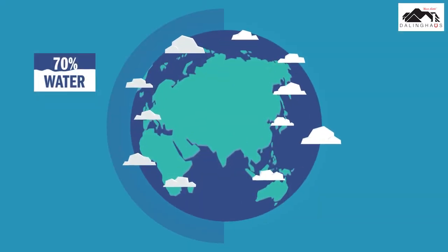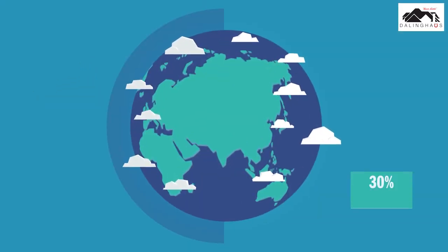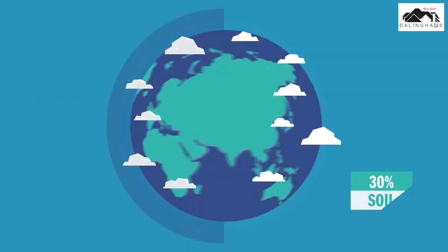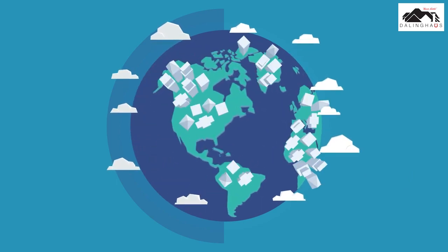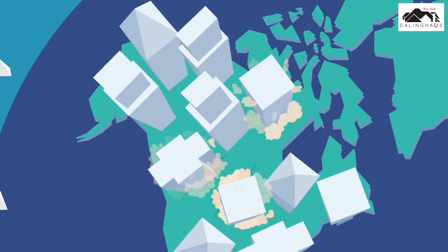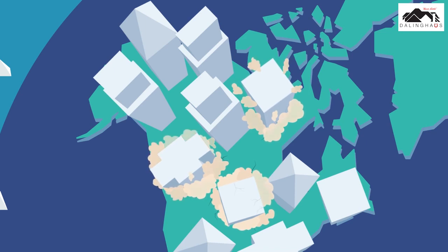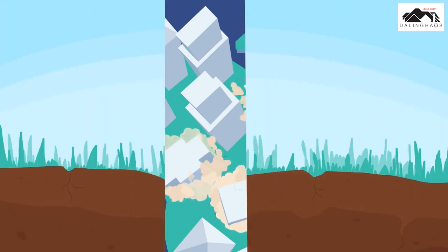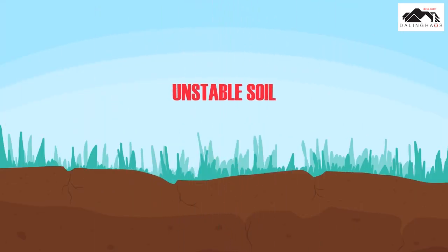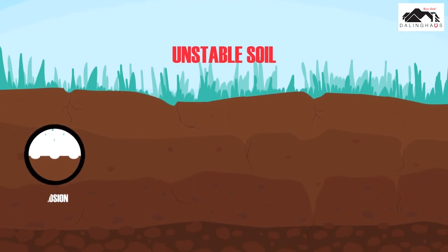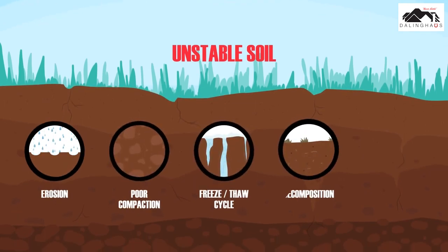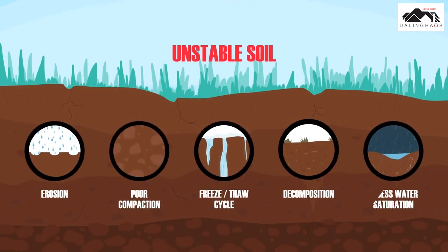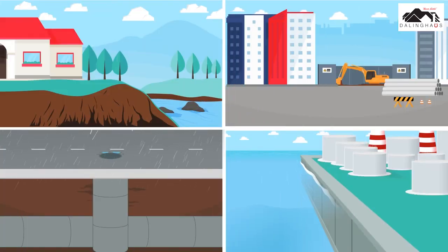Our world is 70% water, that leaves 30% land for us to live on. But not all of the soil under our feet is stable, and that can cause extreme and costly damage to buildings and other infrastructure. Unstable soil can be caused by erosion or compaction, freeze-thaw cycles, decomposition, and heavy rains.